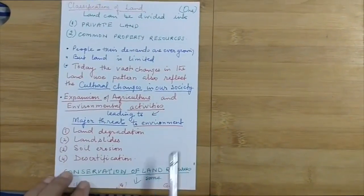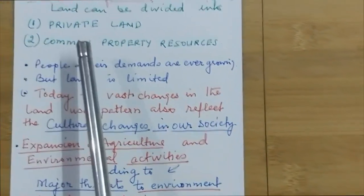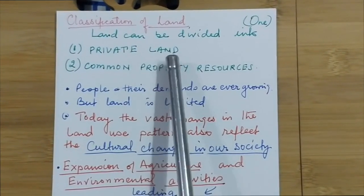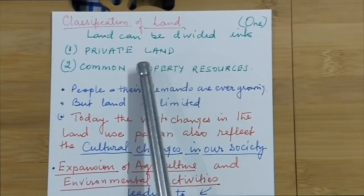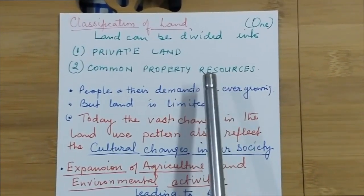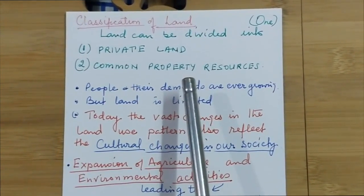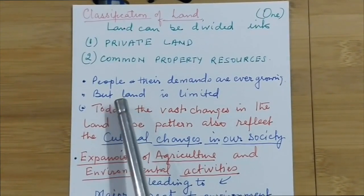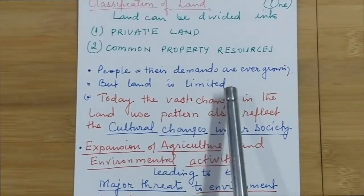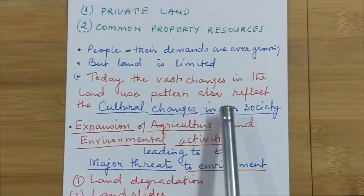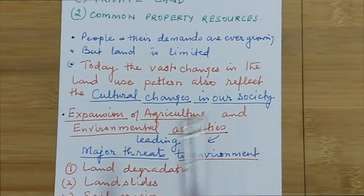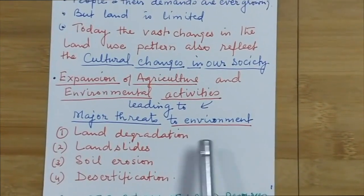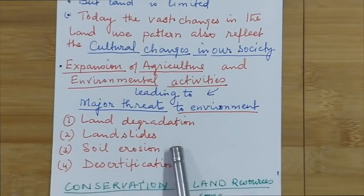Next comes classification of land. Land can be divided into private land or common property resources. Private land is owned by an individual person. Common property resources are property shared by everyone, such as the village meeting place or grazing areas. People and their demands are ever growing, but we have very limited land. Today, the vast changes in land use pattern also reflect the cultural changes in our society. Expansion of agriculture and other activities is leading to major threats to the environment, such as land degradation, landslides, soil erosion, and desertification.